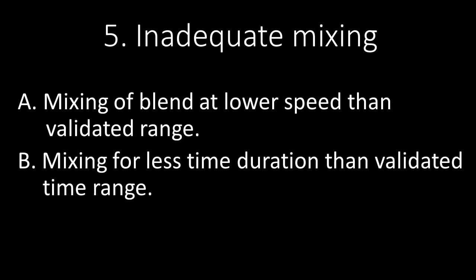The fifth reason for lower assay of a product is inadequate mixing of API with other ingredients or excipients. This may happen due to two reasons: first, mixing of the blend at a lower speed than the validated range, and second, mixing for less time duration than the validated time range.